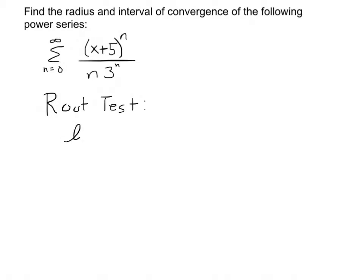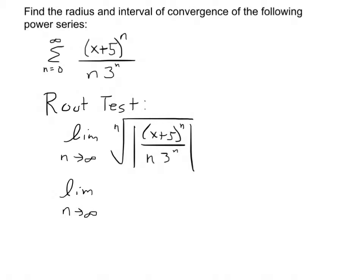So here we go with the root test. For the root test, I'm supposed to take the limit as n approaches infinity of the nth root of the absolute value of this thing. And in a number of cases, this works out really nicely. That nth root is going to cancel with that and with that.